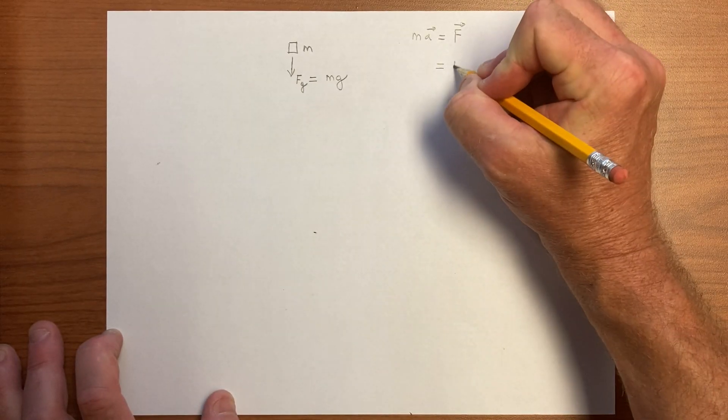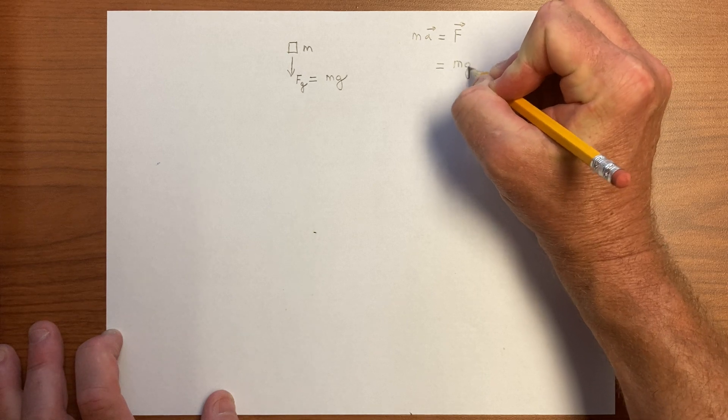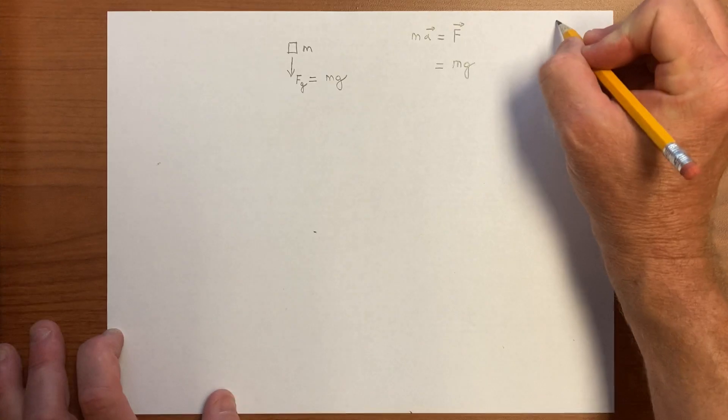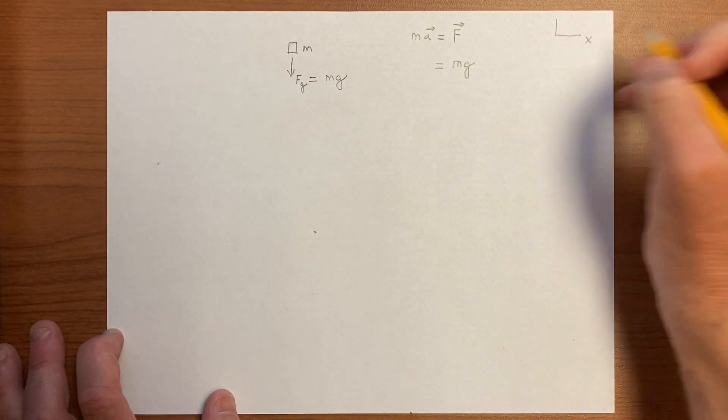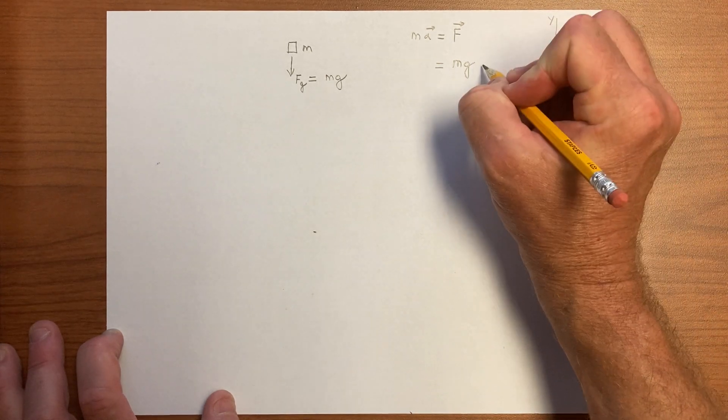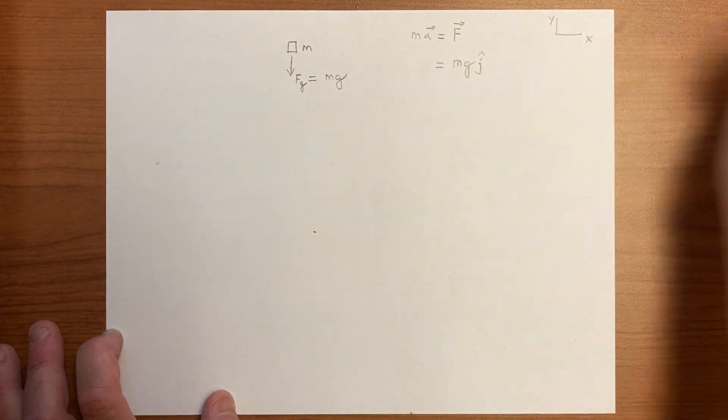But there is a strange coincidence here because the force mg, in a coordinate system where x is horizontal, y is vertical, and z would be out. The gravity is acting in the vertical direction, so this would be mg y hat.